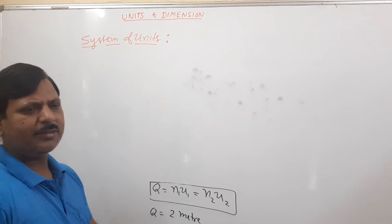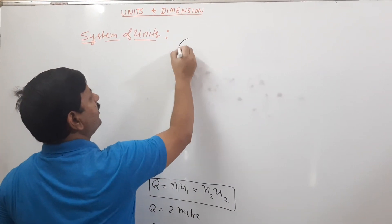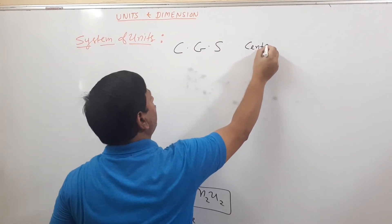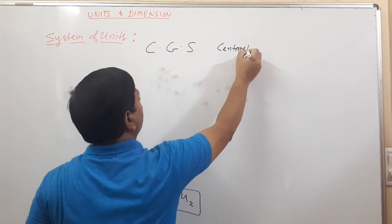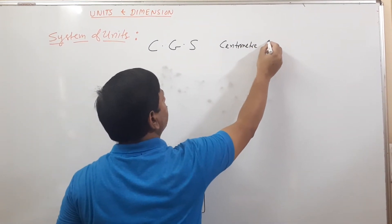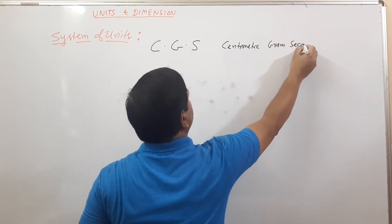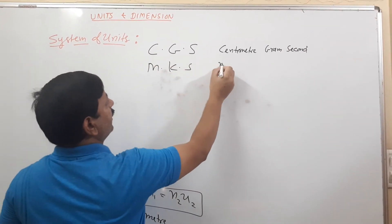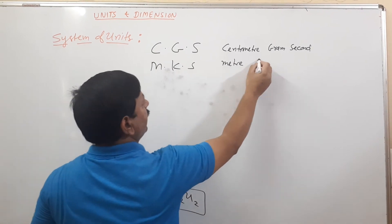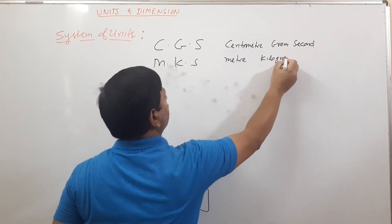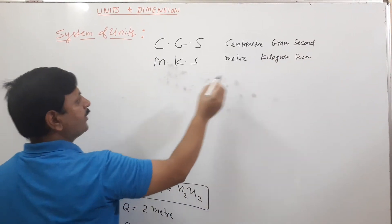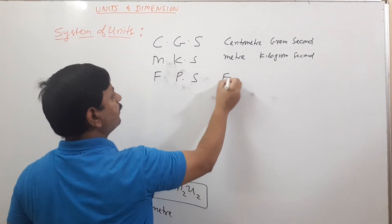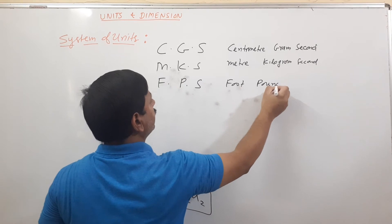In old days, we generally had three systems. The first is CGS: centimeter, gram, second. Another was MKS: meter, kilogram, second. And the third is FPS: foot, pound, second.